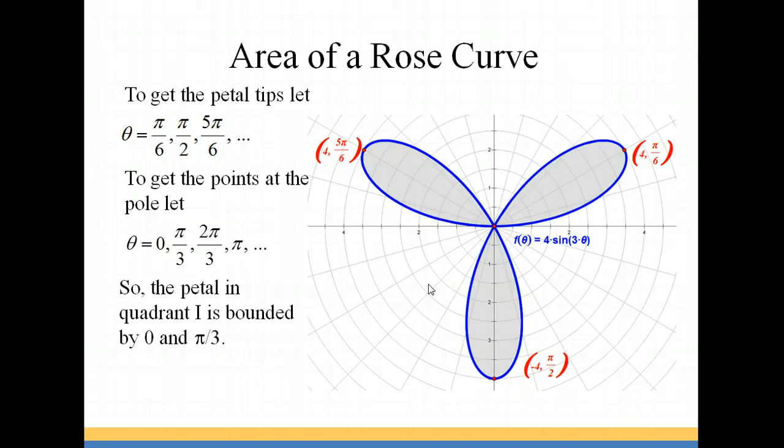So the petal in quadrant 1 is going to be bounded by 0 and pi over 3. Let's look at this in more detail.